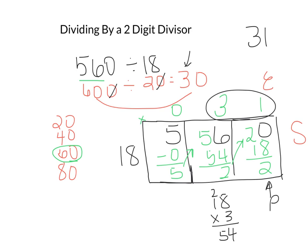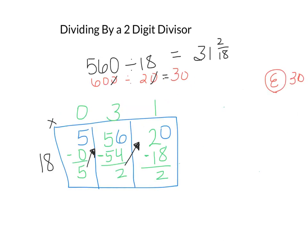We solved it using the standard algorithm in the box format for a final answer of 31, with 2 remaining — remainder 2 over 18. What I've done now is just cleaned it up a little so you can see: our estimate was 30, our solve came up as 31 remainder 2/18, and now we're going to do our check.